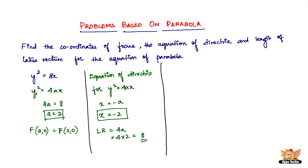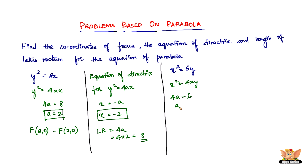Now let's look at the next question: x² = 6y. The question is again to find the coordinates of focus, the equation of directrix, and the length of latus rectum for x² = 6y. This is clearly of the form x² = 4ay.